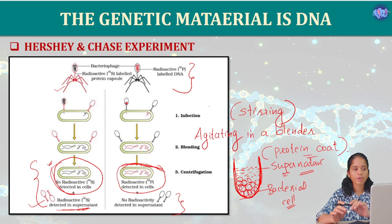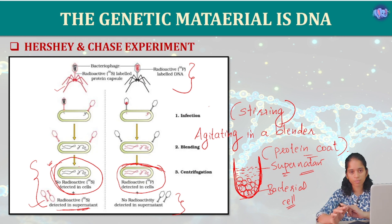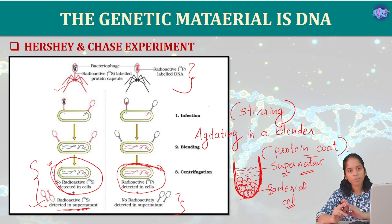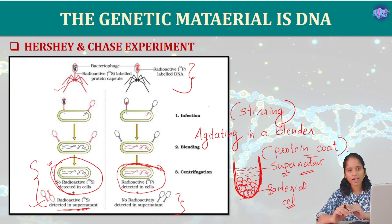In summary, there are three steps in the Hershey and Chase experiment: infection, blending, and centrifugation. In the infection stage, bacteria are infected by the bacteriophage. In the blending stage they are stirred, and centrifugation separates the components. The results show that DNA — not protein — is the genetic material. That is the Hershey and Chase experiment.